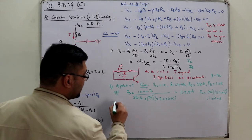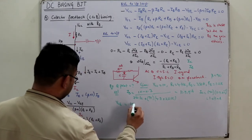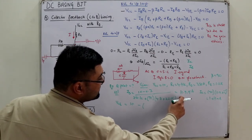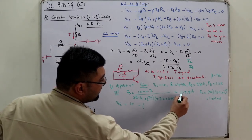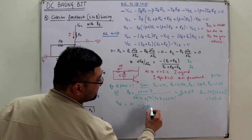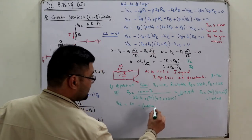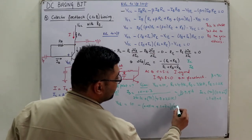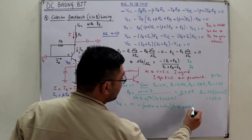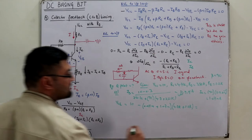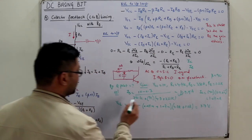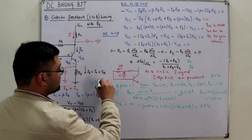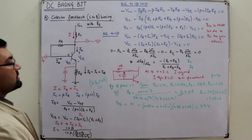VCE = VCC − (IB + IC)·(RC + RE). IB is in the micro-ampere range so IB ≈ 0.01 mA. Thus VCE ≈ 10 − (0.01 + 1.07 mA)·(4.7 kΩ + 1.2 kΩ) = 3.7 V. So the Q point is at VCEQ = 3.7 V and ICQ = 1.07 mA.